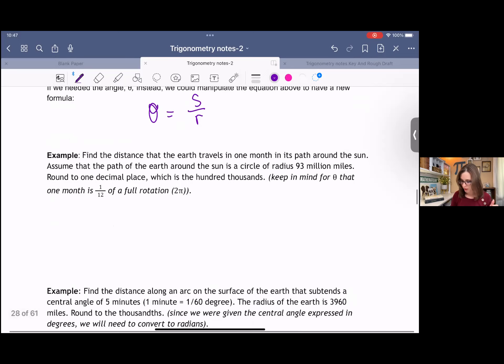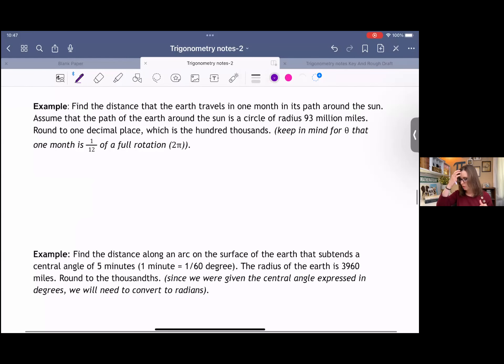I have an example here. Find the distance that the earth travels in one month in its path around the sun. Assume that the path of the earth around the sun is a circle of radius 93 million miles. Round to one decimal place. And also keep in mind that one month is one twelfth of a full rotation.